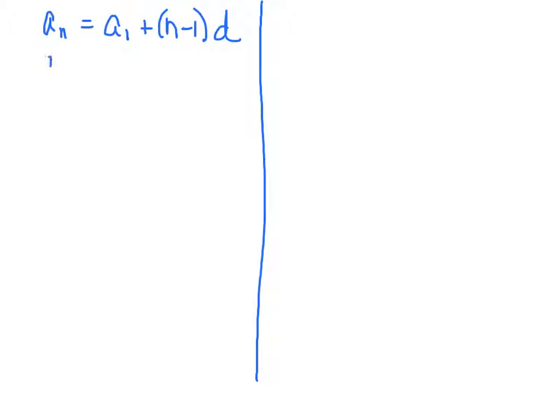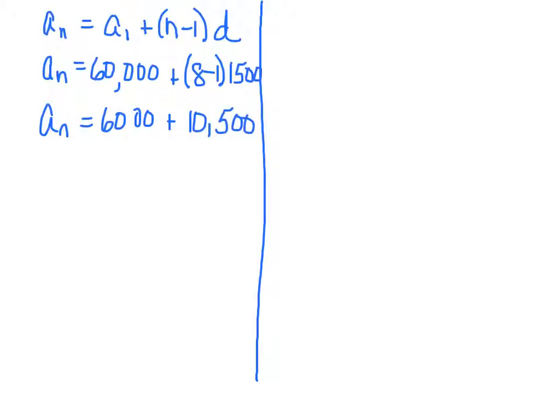And the reason why it's arithmetic is because we're adding $1,500 onto her salary every year after the first year. So basically, what she's doing is she's starting with a base salary of $60,000. So that's her a sub 1 plus, now what she's going to do is n is the number of years. So that's going to be 8 minus 1. And her d would be $1,500. And then we just solve. So a sub n equals $60,000 plus the 7 times $1,500, which would be $10,500. And so then, after 8 years, this is how much she would make. Now that's taking the $1,500 raise.